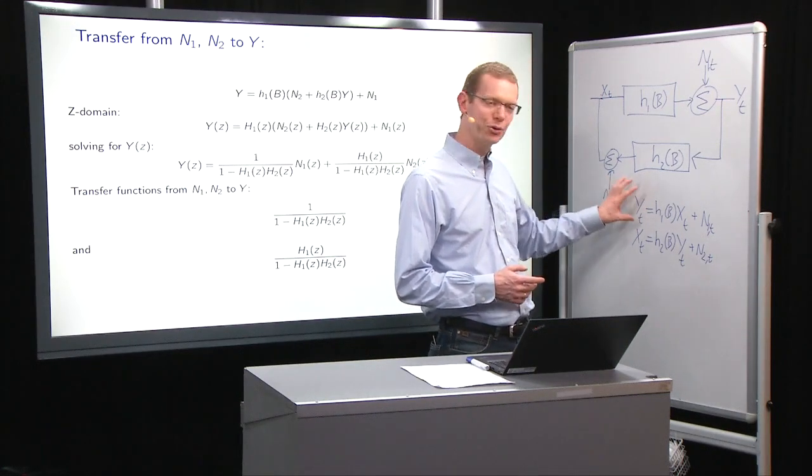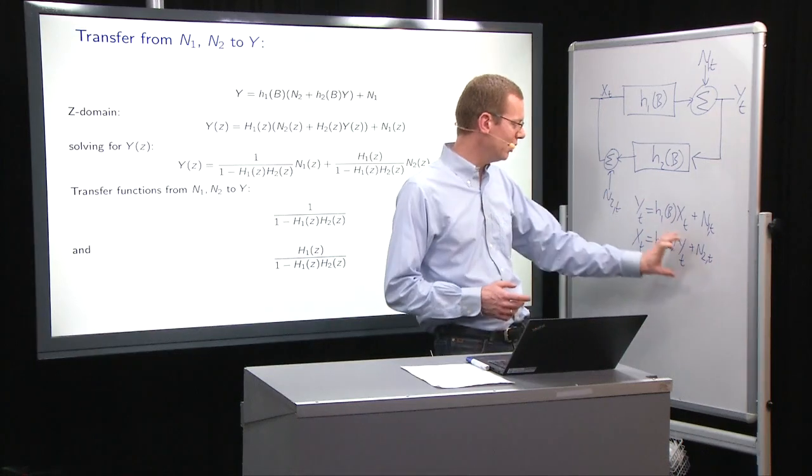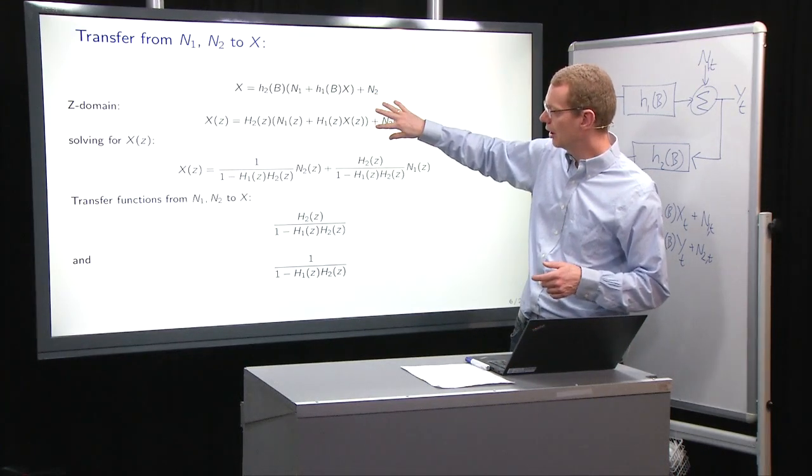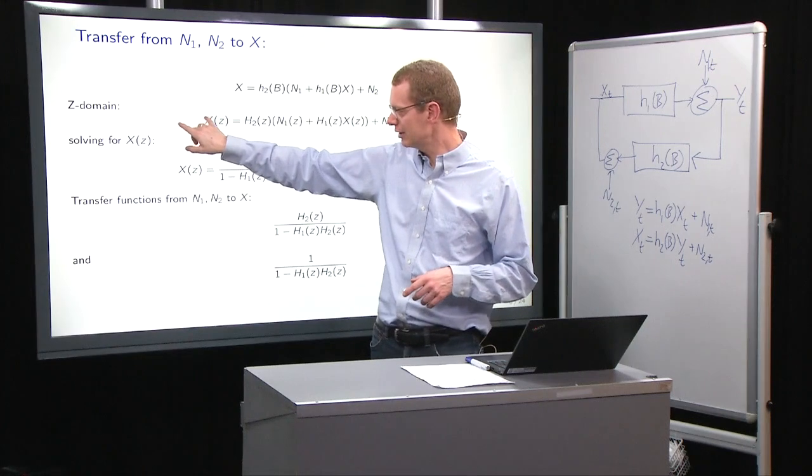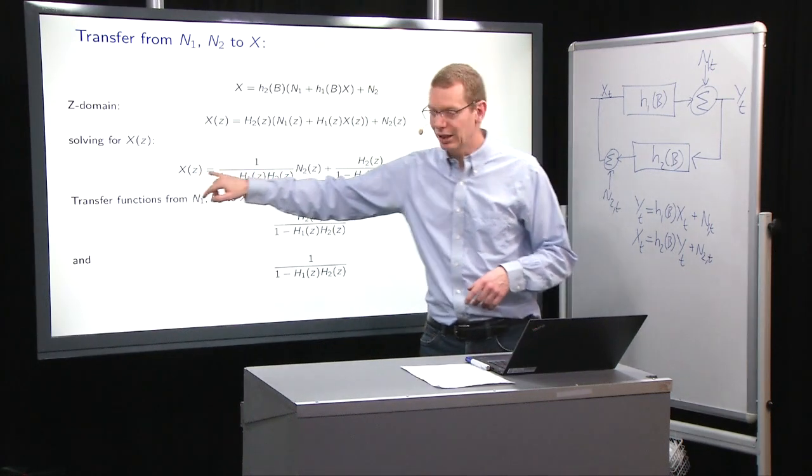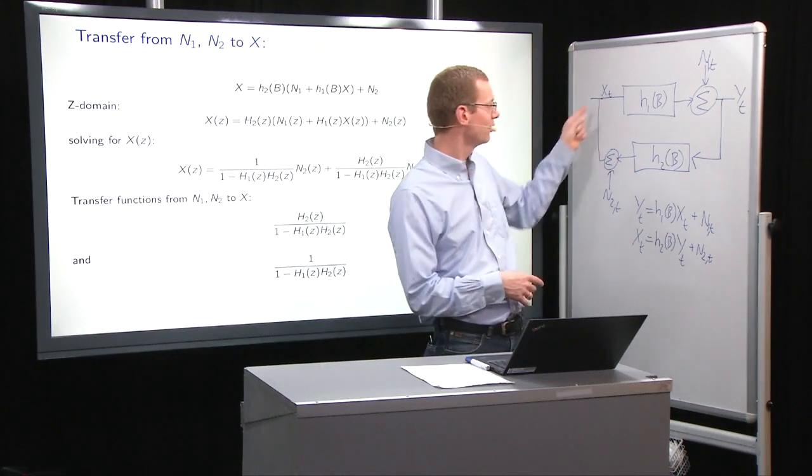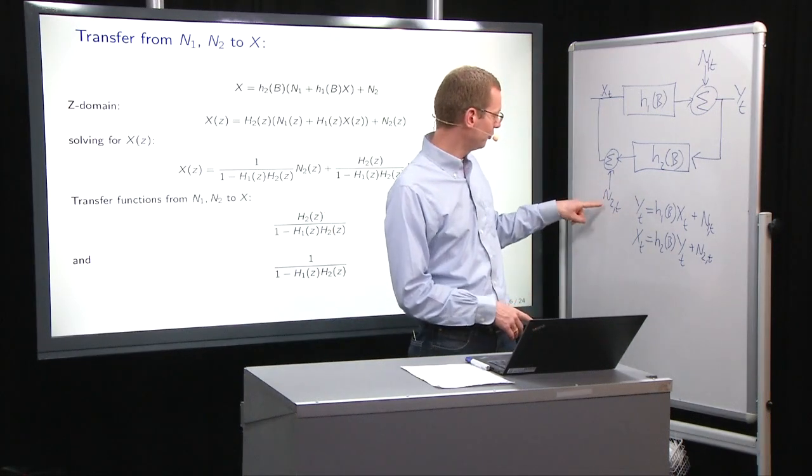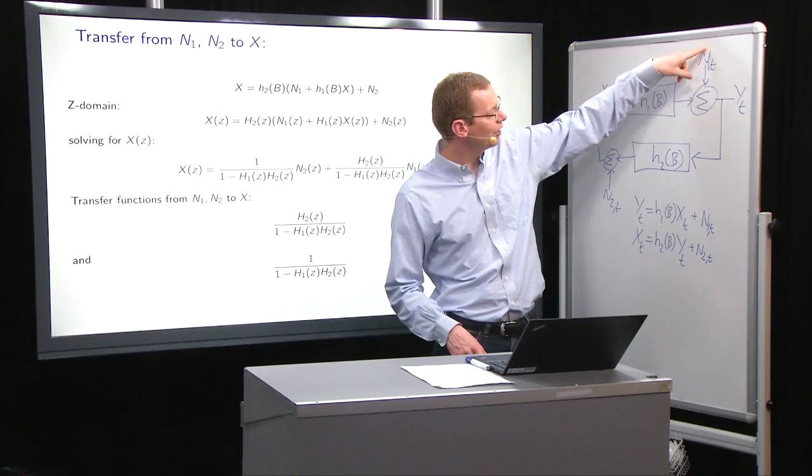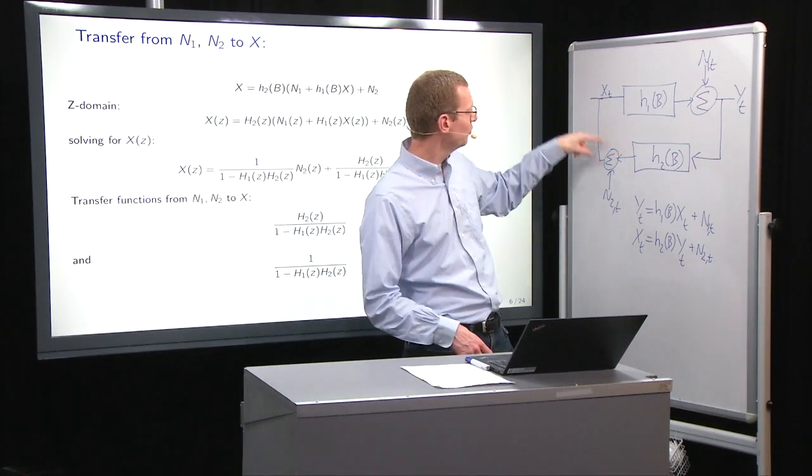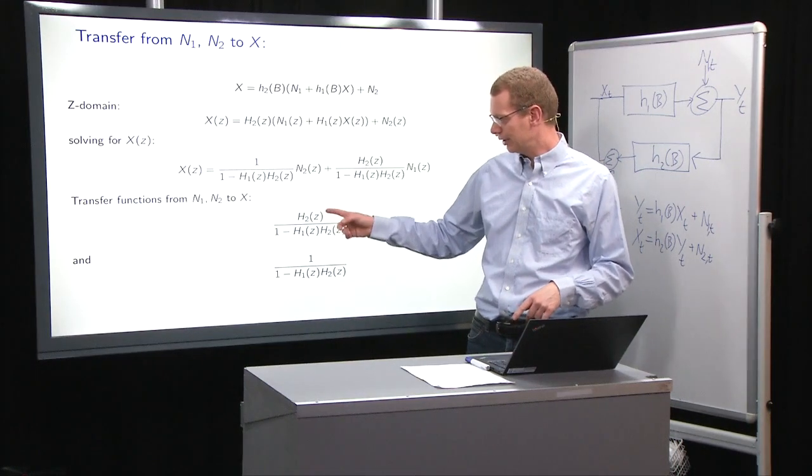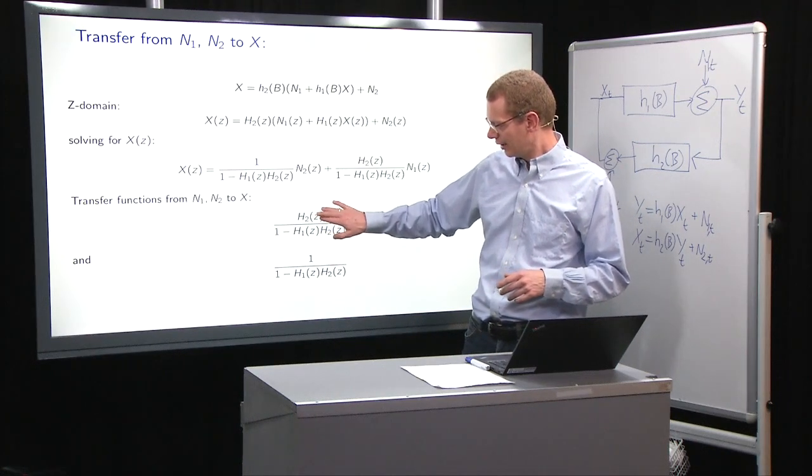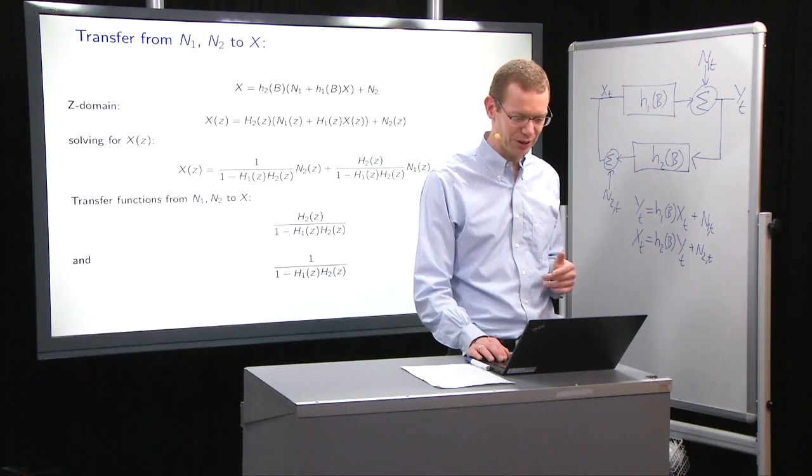That was from N1 and N2 to Y. But of course, we could also do it reverse by inserting the expression for Y in the equation for X, and then do the same thing. You do the transformation to the Z domain, and then you isolate X on the left-hand side. And again, you get the same denominator because it's the same closed loop that you have here. And then you get a contribution from N2, where the contribution from N2 to X goes directly, whereas from N1, you go through H2 before you get to X. So the symmetry here is quite obvious that it's the other one that has to go through a system part before getting out.